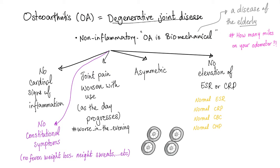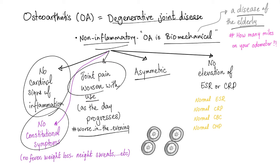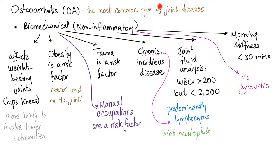Osteoarthritis — degenerative joint disease, non-inflammatory, biomechanical, a disease of the elderly. It's non-inflammatory, therefore no cardinal signs of inflammation, no constitutional symptoms. The joint pain worsens with use, so at the end of the day the pain is worst. It is asymmetric because it's mechanical. No elevation of ESR, CRP, or any other inflammatory marker. Osteoarthritis is the most common type of joint disease.